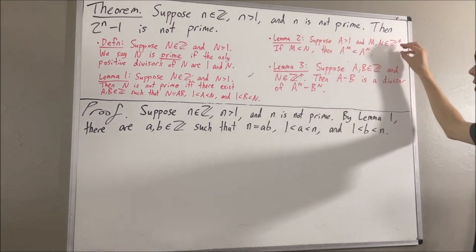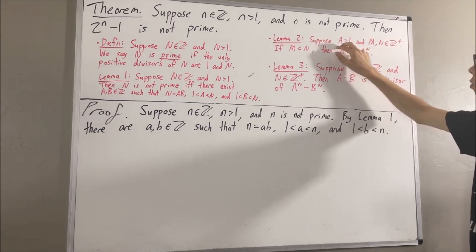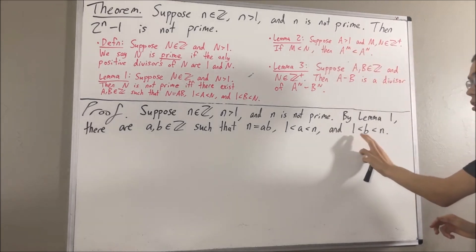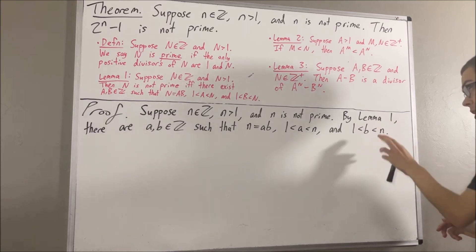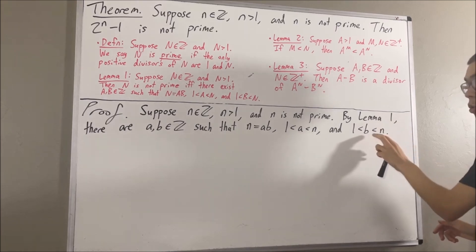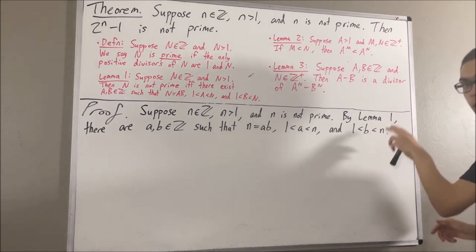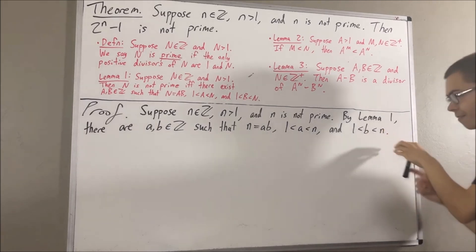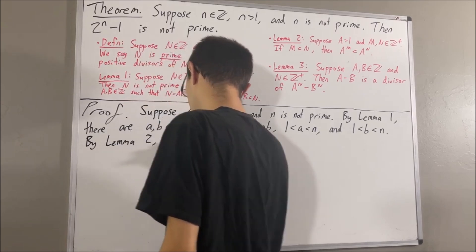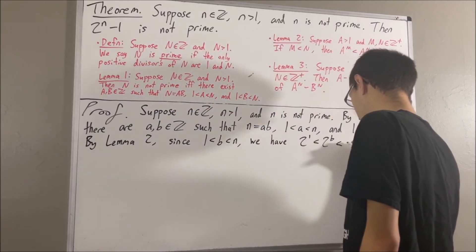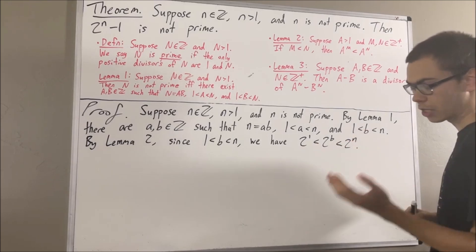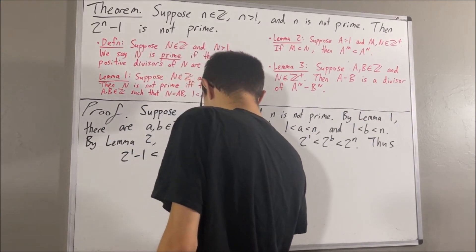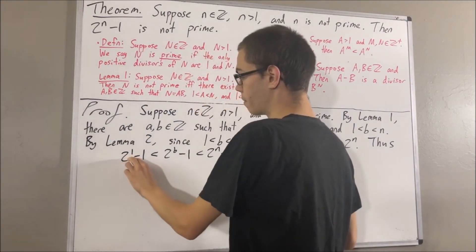Now we're going to apply lemma 2. If we take capital A to be 2, then since 1 is less than b, this tells us that 2 to the power of 1 is less than 2 to the power of b. Similarly, since b is less than n, we have that 2 to the power of b is less than 2 to the power of n. So overall, 2 to the power of 1 is less than 2 to the power of b is less than 2 to the power of n. Then let's subtract 1 on all three sides of this inequality, and we know that 2 to the power of 1 minus 1 is equal to 1.